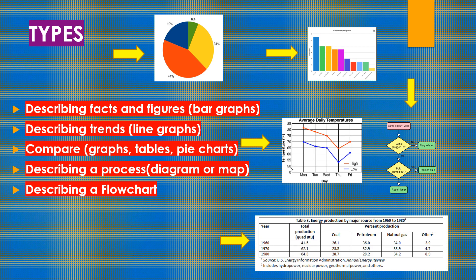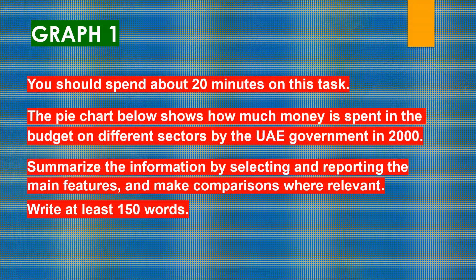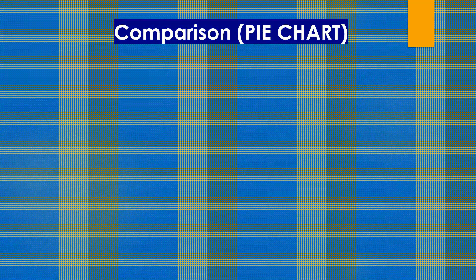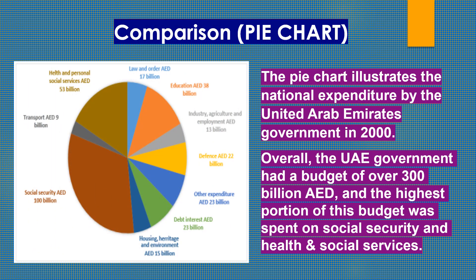Let's move on to graph 1. You should spend about 20 minutes on this. The pie chart below shows how much money is spent in the budget on different sectors by the UAE government in 2000. Summarize the information by selecting and reporting the main features and make comparisons where relevant. Write at least 150 words. Now let's take a look at the comparison of the pie chart and an ideal answer that can help you score a good band.